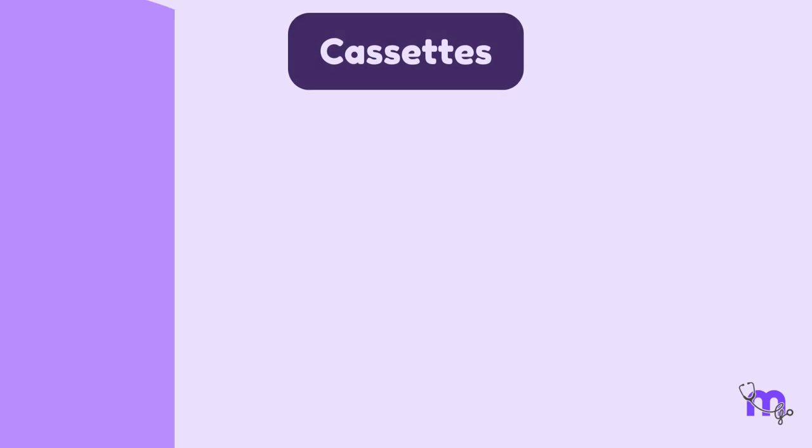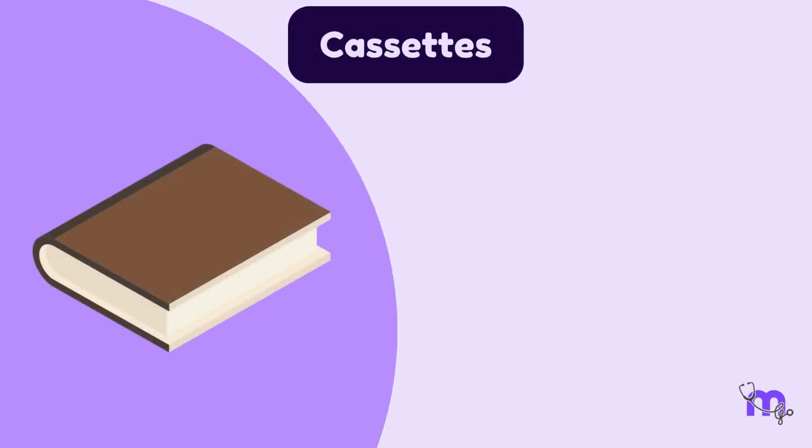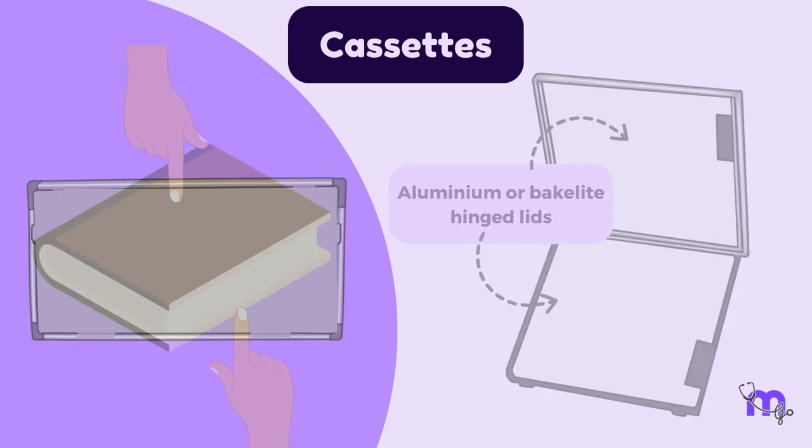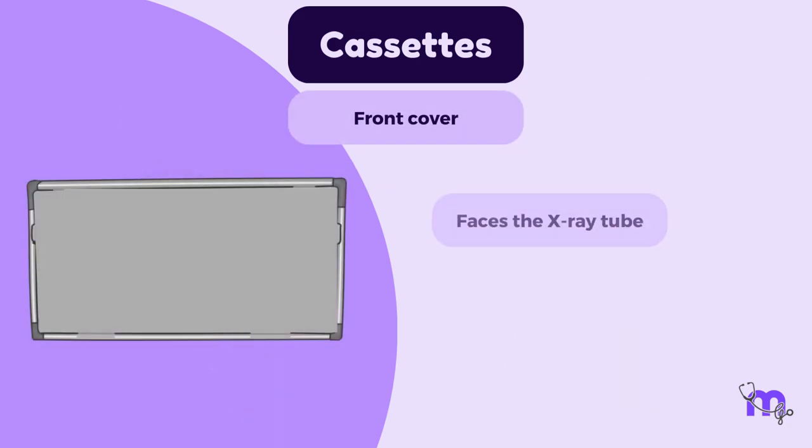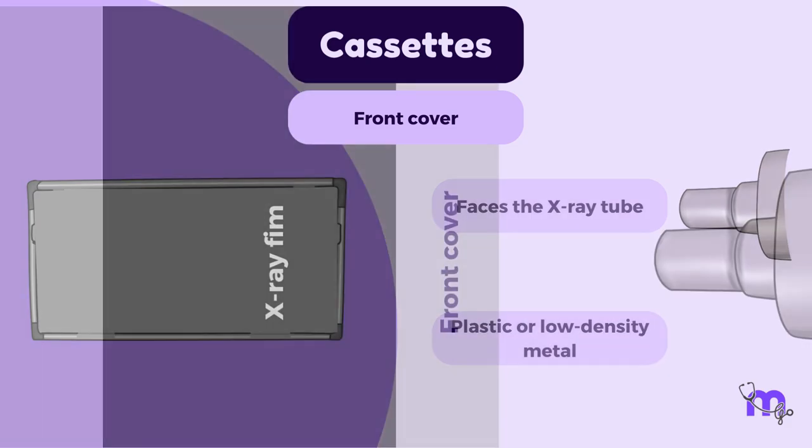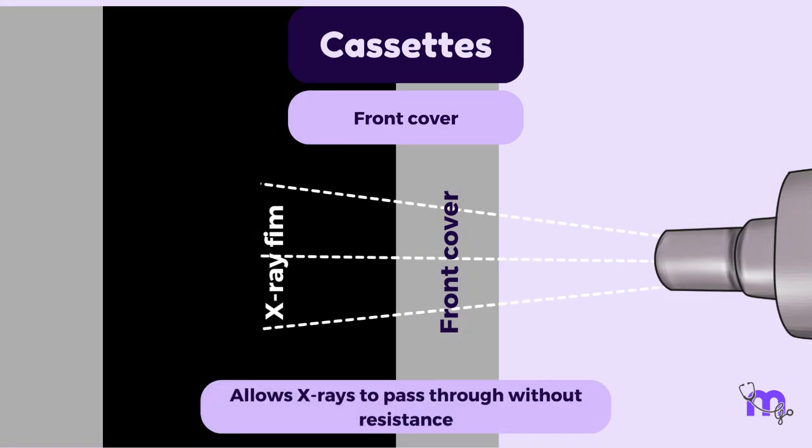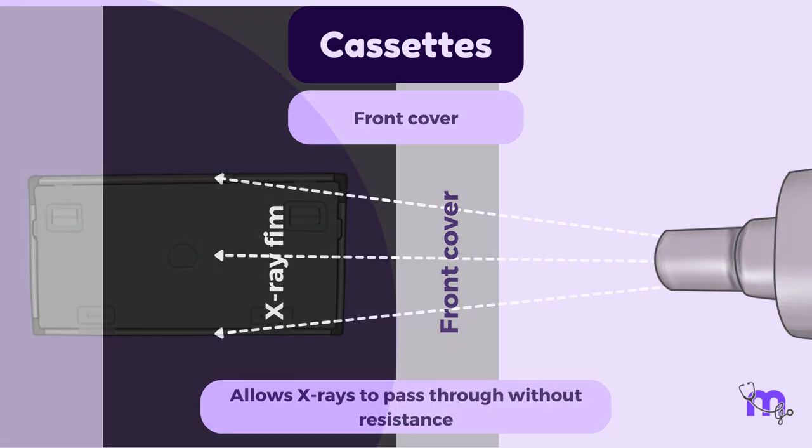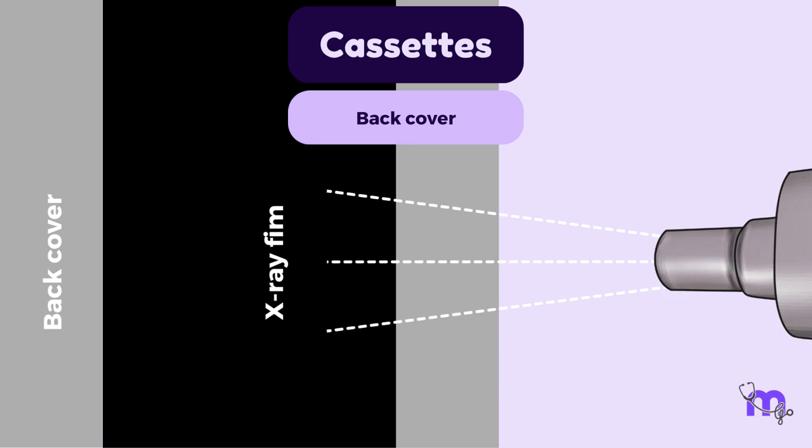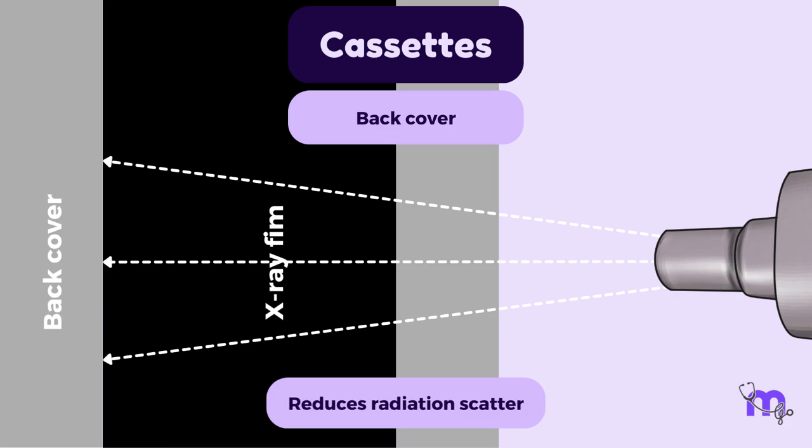Let us understand how a cassette is constructed. Imagine a hard-bound book of three pages, where the front and back cover can be compared to the two aluminum or Bakelite hinged lids of the cassette. The front cover of the cassette faces the X-ray tube and is constructed of plastic or low-density metal, allowing X-rays to pass through without resistance. The back cover is made of heavy metal lined with lead to absorb X-rays that pass through the front lid and the film, thereby reducing scatter radiation.